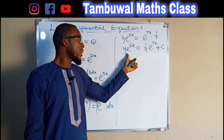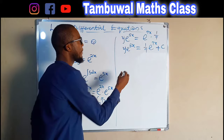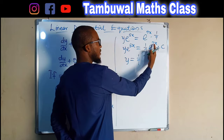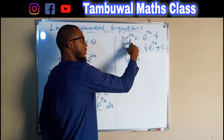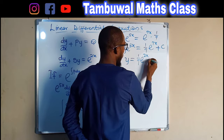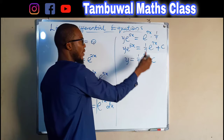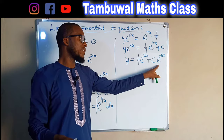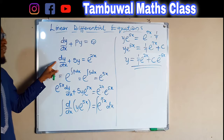You can leave your solution in this form, or if you like, divide both sides by e^(5x) to have y alone. Dividing gives y = (1/7)e^(7x)/e^(5x) + C/e^(5x). Using laws of indices, 7 minus 5 is 2, so we have y = (1/7)e^(2x) + Ce^(-5x). This is the solution for this linear differential equation.